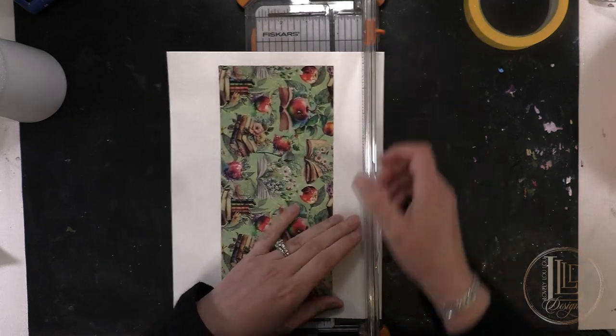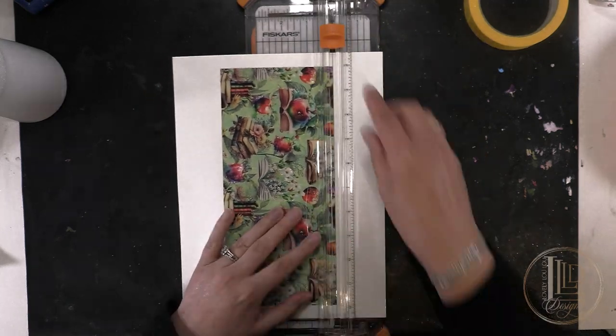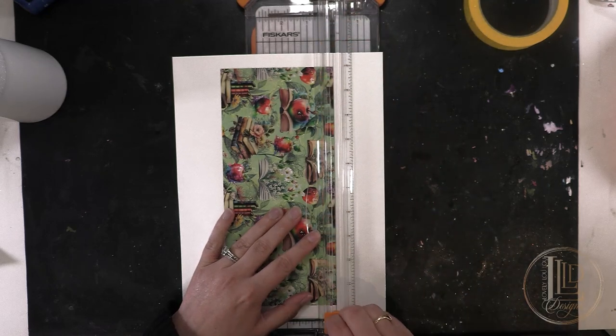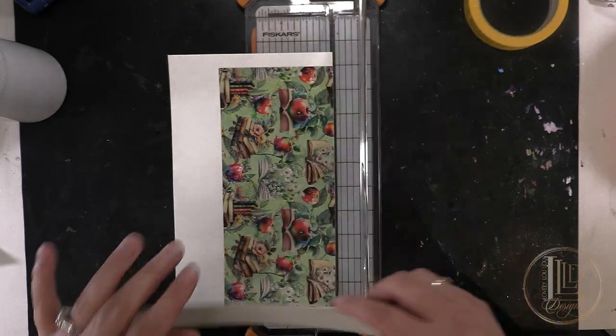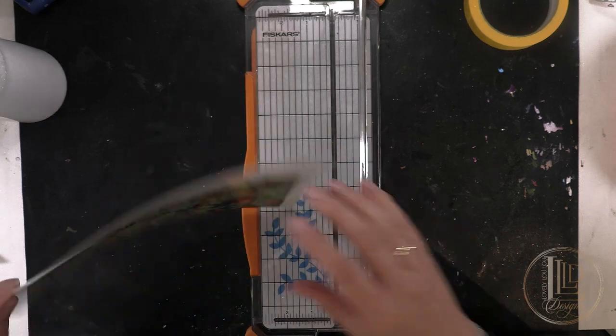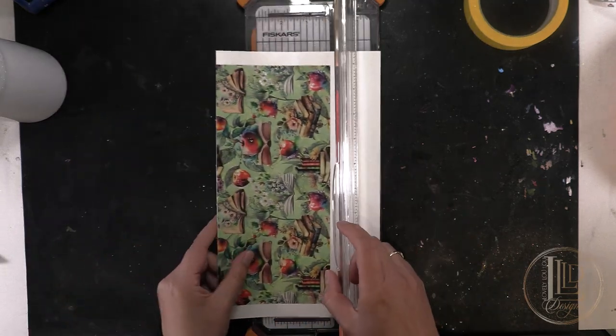To use the cutter, simply line the edge of your design with the wire, being careful to line it straight with the edge, and simply slide the blade down. Repeat this process on the remaining sides until your design is completely cut out.